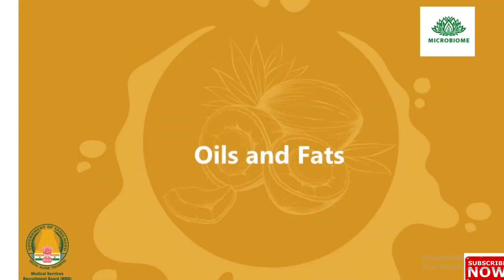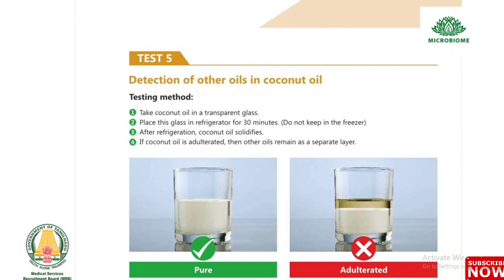Next, about oils and fats. Test 5: Detection of other oils in coconut oil. Take coconut oil in a transparent glass and place the glass in a refrigerator for 30 minutes — do not keep in the freezer. After refrigeration, coconut oil solidifies. If coconut oil is adulterated, the other oils remain as a separate layer.